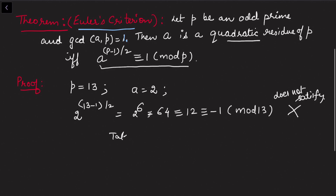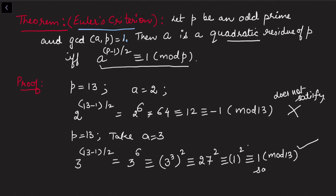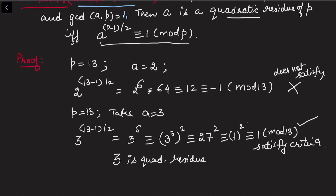Now take a = 3, still with p = 13. Computing 3^((13-1)/2) = 3^6 = (3^3)² = 27². We know 27 ≡ 1 (mod 13) since 27 - 1 = 26 is divisible by 13, so 27² ≡ 1² ≡ 1 (mod 13). This satisfies the criteria, so 3 is a quadratic residue of 13.